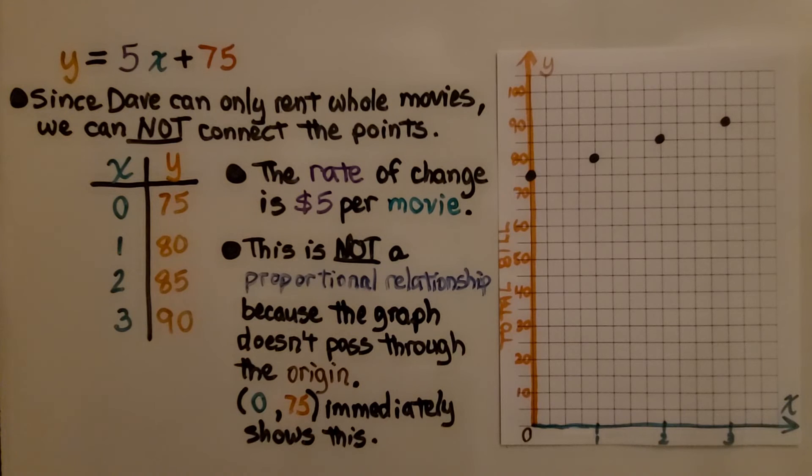We have our equation, y = 5x + 75. Since Dave can only rent whole movies, we cannot connect the points. Here's our ordered pairs: (0,75), (1,80), (2,85), (3,90).